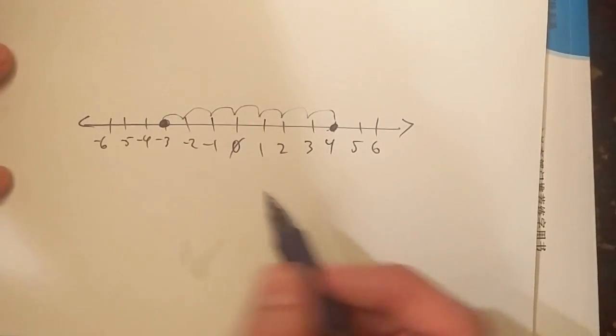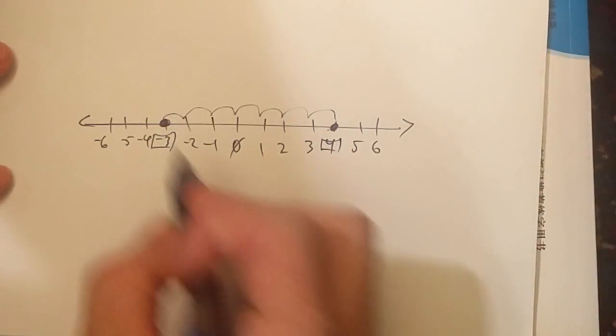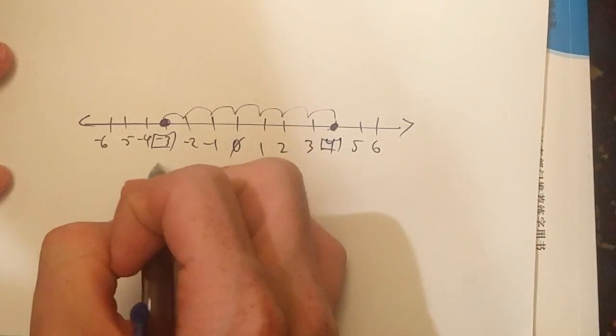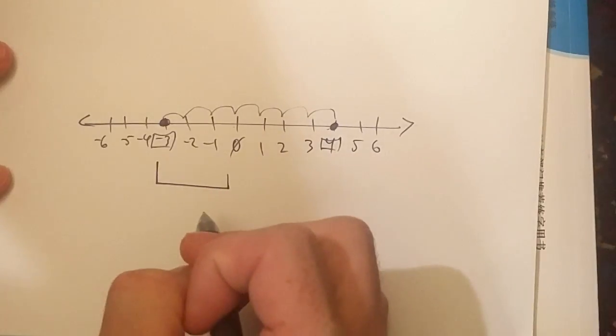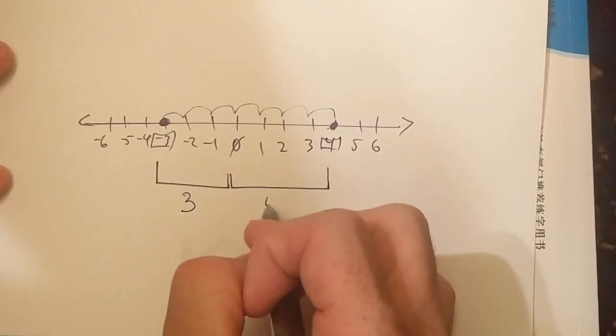A shortcut I could do is find the absolute value of these two numbers. Well, what's negative three? The distance from negative three to zero is three. The distance from zero to four is four.